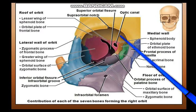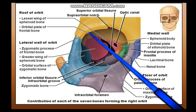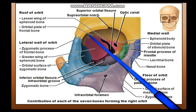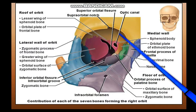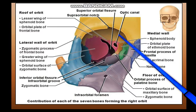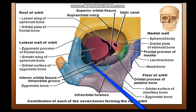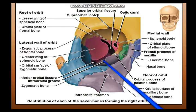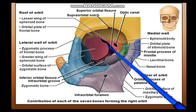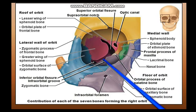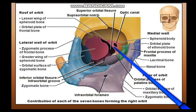In the roof of the orbit, the most distinguishing feature is underneath the orbital plate of the frontal bone: you have the lacrimal fossa which lodges the lacrimal gland. We won't discuss the lacrimal gland with the orbit; we will discuss it with the eyelids and the lacrimal apparatus. Somewhere on the under surface of the orbital plate of the frontal bone you have the pulley for the superior oblique — the attachment of the pulley of the superior oblique. Now between the roof and the lateral wall you have the superior orbital fissure, and between the lateral wall and the floor you have the inferior orbital fissure, and these two are more or less continuous.